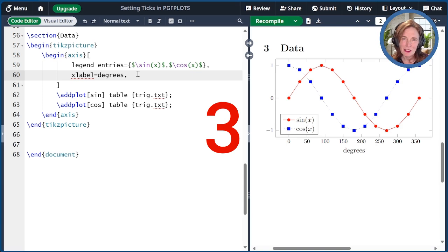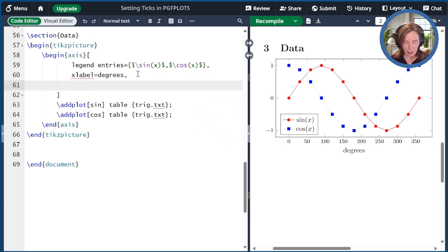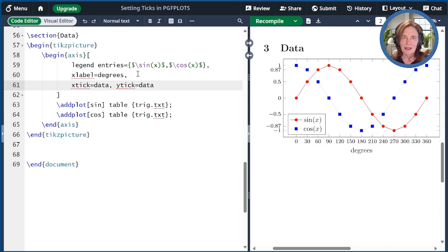The third way to set the ticks in pgfplots is to use a data option. Here I'm going to paste x tick equals data and y tick equals data, and let's see the result. We see that the y ticks have changed using the y coordinates of the data. So now we have minus 1, minus 0.87, minus 0.5, all the way up to 1.